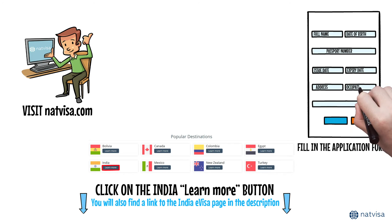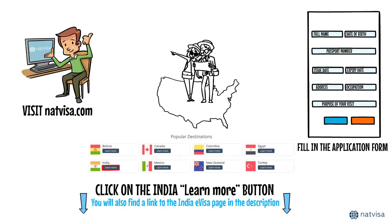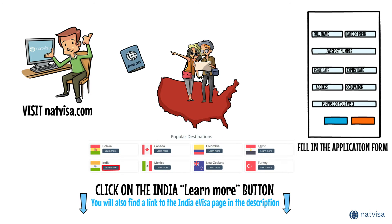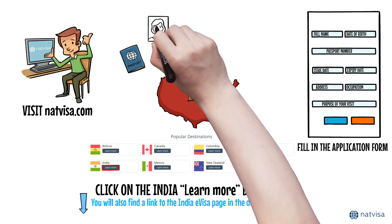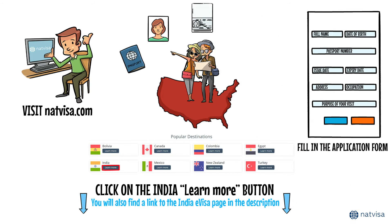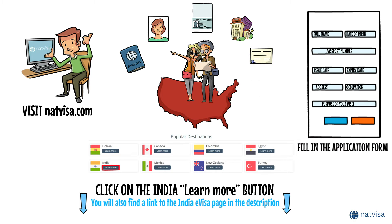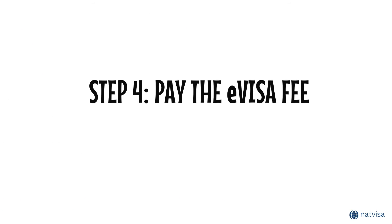You'll also need to provide your address, occupation, and the purpose of your visit. United States citizens will have to upload the required documents needed for the e-visa to India. It's crucial to review your application carefully before submitting it, as errors may lead to rejection or delays in processing. By taking these steps, you'll be well on your way to securing your e-visa.